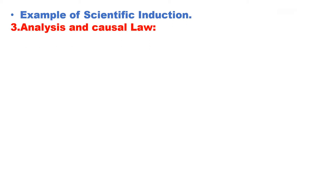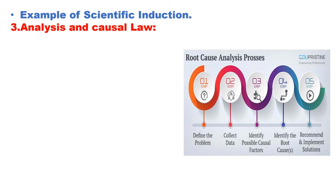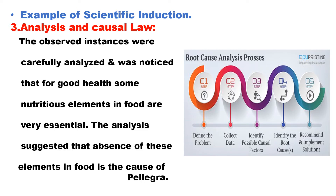The third stage is analysis and causal law. The observed instances are analyzed and the causal relationship is found between them. They define the problem, collect the data, identify the possible causal factors, then identify the root cause, and recommend and implement the solution. The observed instances were carefully analyzed and it was noticed that for good health, some nutritious elements in food are very essential. The analysis suggested that the absence of these elements in food is the root cause of pellagra.